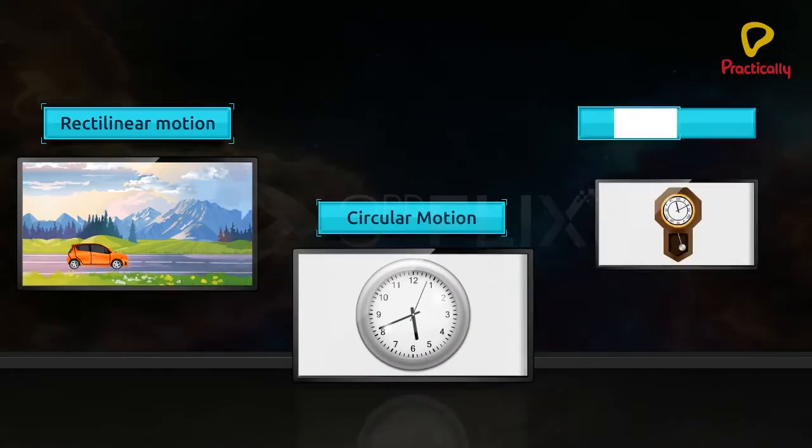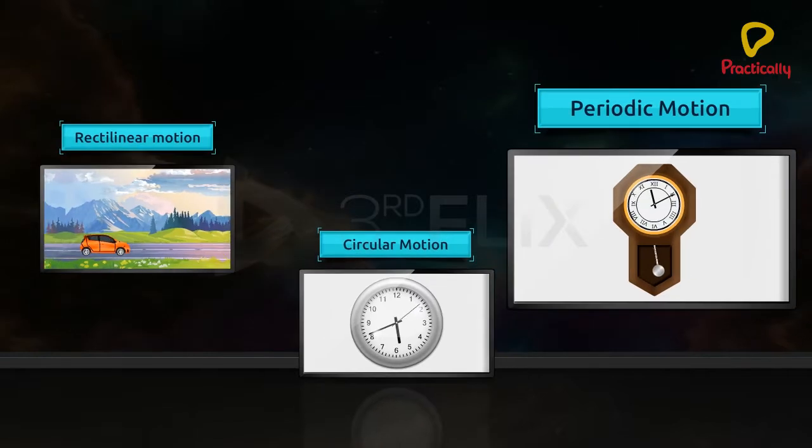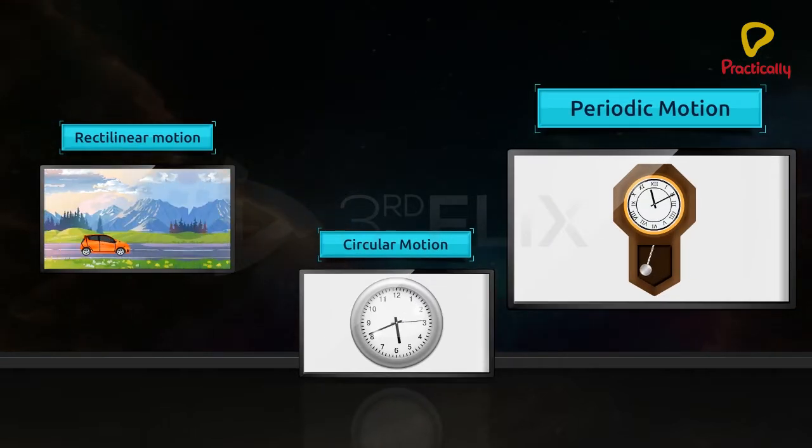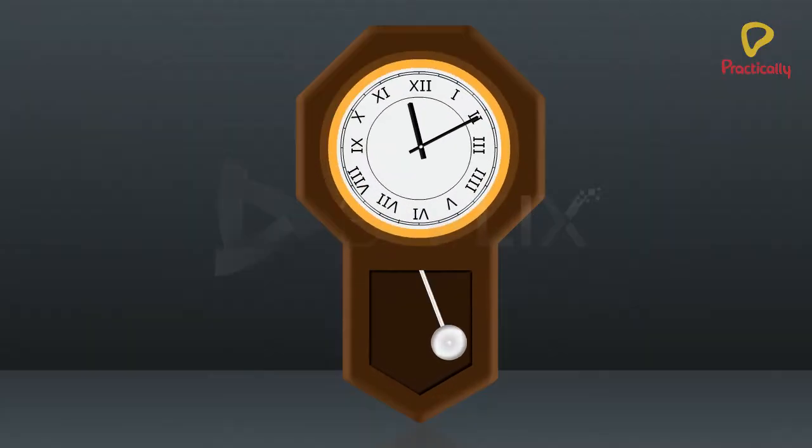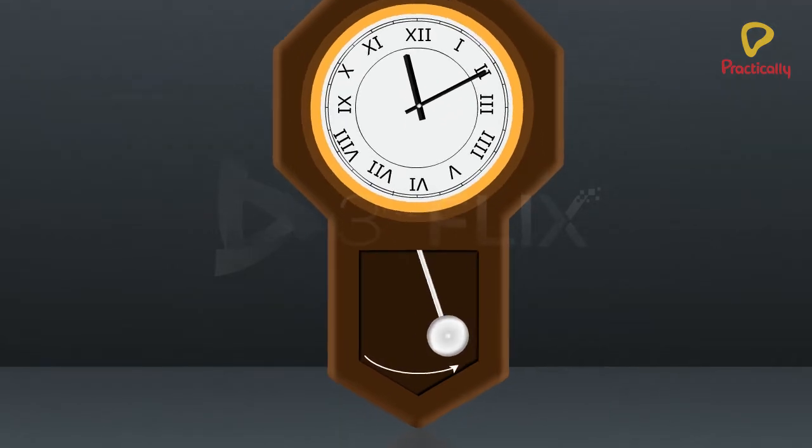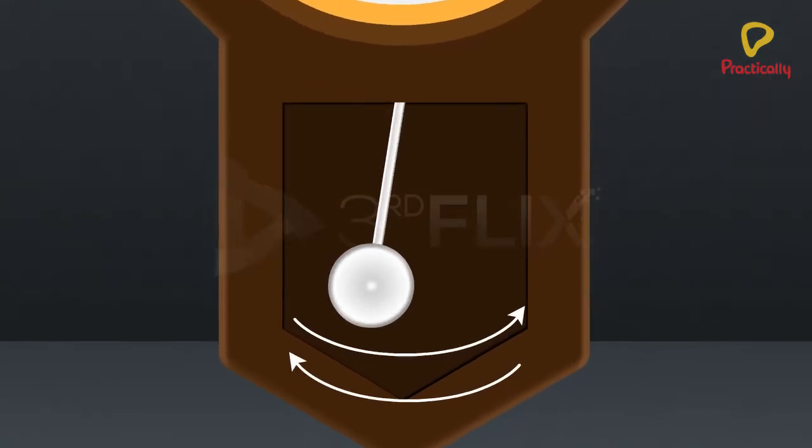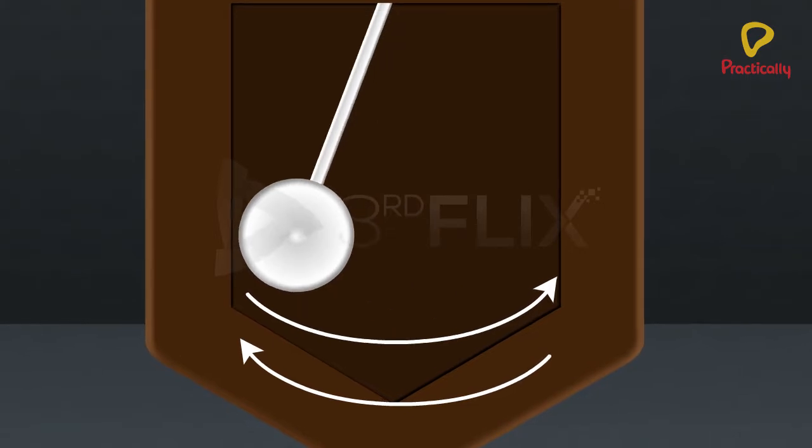There is a third type of motion, that is, periodic motion. When the motion of an object repeats itself in equal intervals of time, it is called the periodic motion.